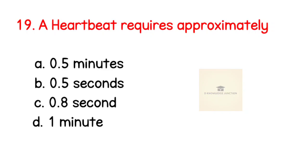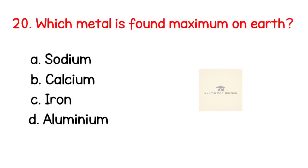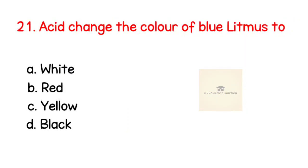Question number 19: A heartbeat requires approximately? Right answer is 0.8 second. Next question: Which metal is found maximum on earth? Right answer is aluminium.